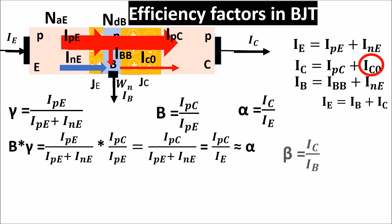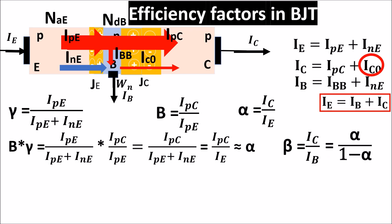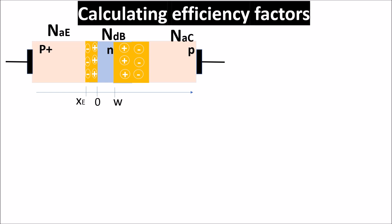The last factor is beta, or the amplification factor, which describes how much larger the collector current is compared to the base current. From the beta-alpha relation, we see that as alpha approaches 1, beta increases and we have better amplification. If we find the relation between efficiency factors and the physical dimensions of the device, we can see how to improve efficiency by acting on base width and doping concentration. To calculate the efficiency factors we must first calculate the currents.